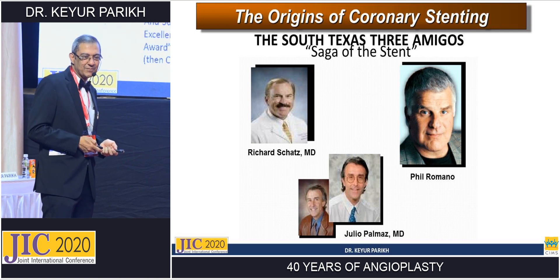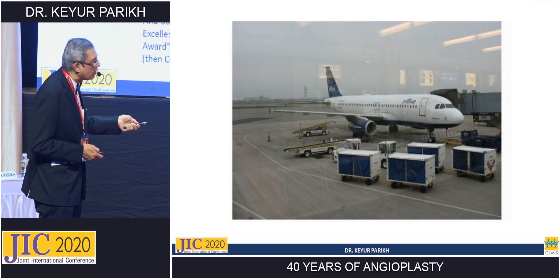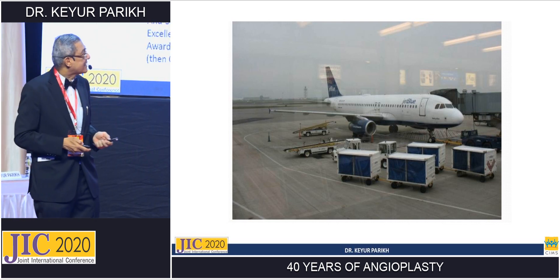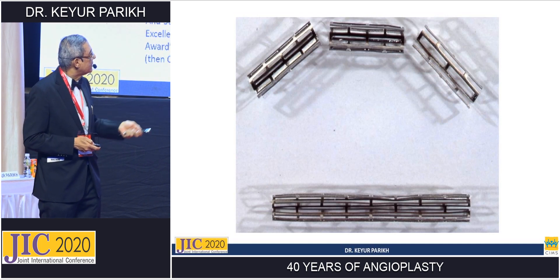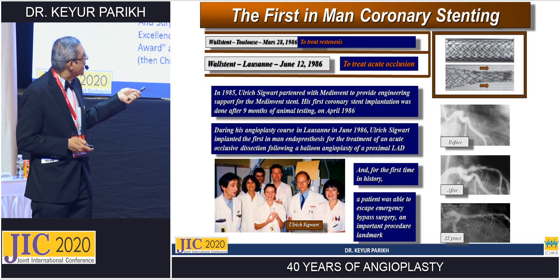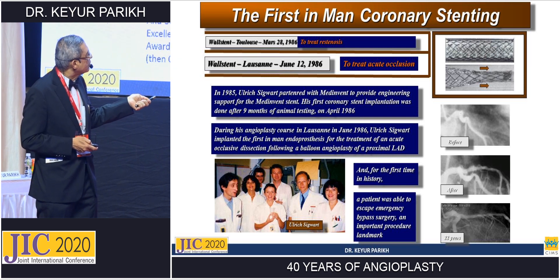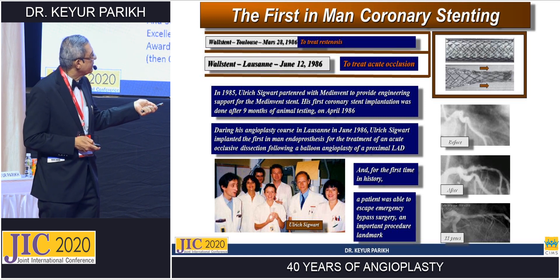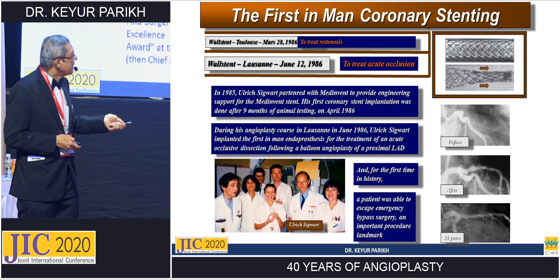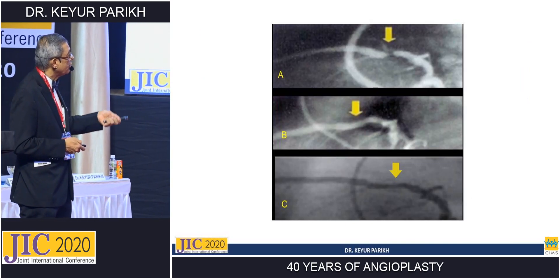While sitting on an airplane, Schatz saw linked trolleys and that is how the flexible stent design came about. From there, the Wallstent in Toulouse, France, and then in Lausanne, started treating the first men with coronary stenting. In 1985, Ulrich Sigwart partnered with Medinvent and Company and performed the first coronary stent implantation after animal testing on April 1986, in a dissection of the LAD. This is the team. He is not remembered as much as Andreas Gruentzig, but I think he was also a pioneering person — I have met him.